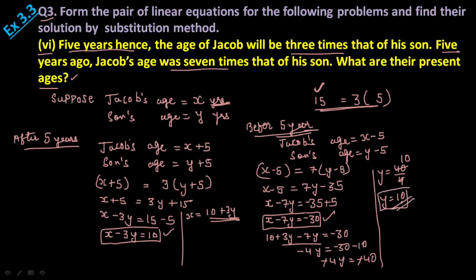Okay, and what about father? Just keep this value of y here, so 10 plus 3 into, on the place of y, 10. So 10 plus 30, 40, so x is 40. So you need to write down a statement at the last guys, that Jacob's present age is 40 years and son's present age is 10 years.